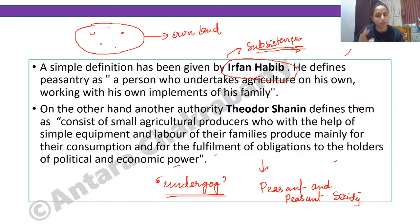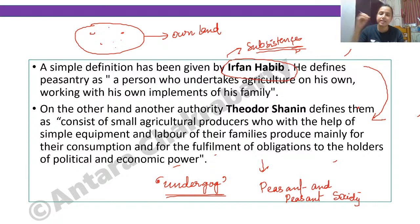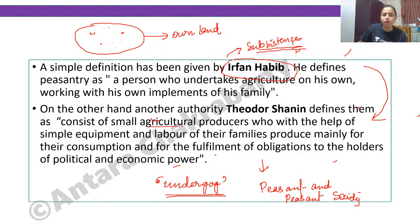Theodore Shanin defines peasants as consisting of small agricultural producers who, with the help of simple equipment and the labor of their families, produce mainly for their own consumption. This expands on Irfan Habib's definition — small farmers, own tools, family laborers, subsistence production.